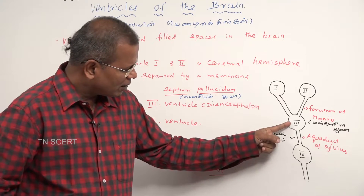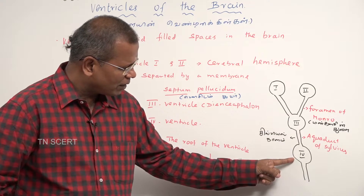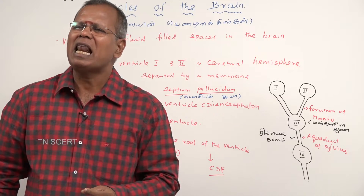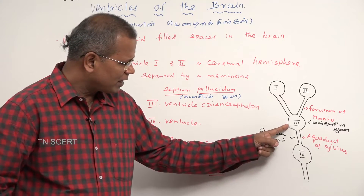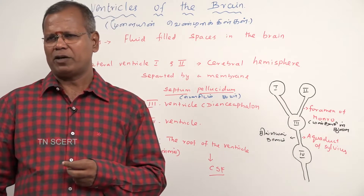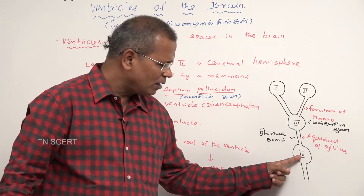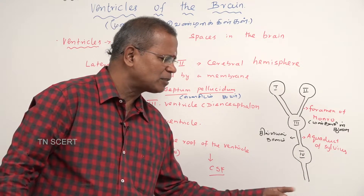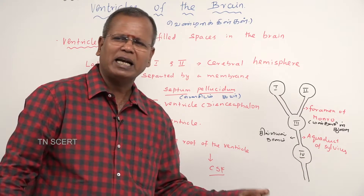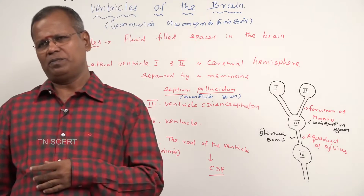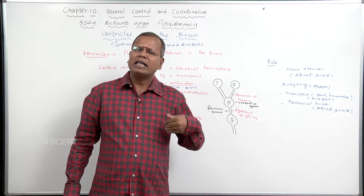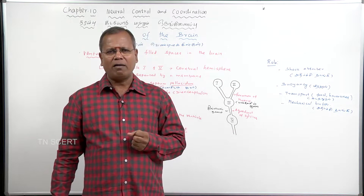The third ventricle communicates with the fourth ventricle through the aqueduct of Sylvius, or cerebral aqueduct. Through this ventricle, through this path, the passage of cerebrospinal fluid takes place.